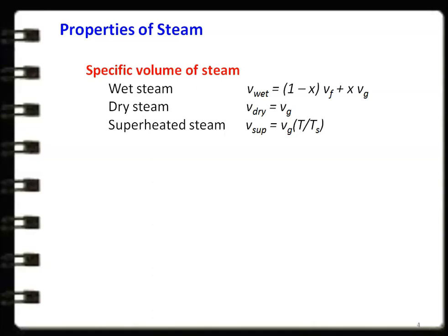First, it is specific volume. We know there are three types of steam: wet steam, dry saturated steam, and superheated steam. The specific volume of wet steam, V_wet = (1 - x)·Vf + x·Vg, where Vf is the specific volume of water and Vg is the specific volume of the steam. The specific volume of dry saturated steam, V_dry = Vg. And the specific volume of superheated steam, V_super = Vg·(T/Ts), where T is the temperature of the superheated steam and Ts is the saturation temperature.